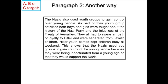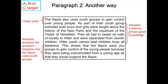The second paragraph: the Nazis also used youth groups to gain control over young people. As part of their youth group activities, both boys and girls were taught about the history of the Nazi party and the injustices of the Treaty of Versailles. They also had to swear an oath of loyalty to Hitler and were separated from Jewish children. The analysis explains that this shows the Nazis used youth groups to gain control because young people were being indoctrinated from a young age so that they would support the Nazis.